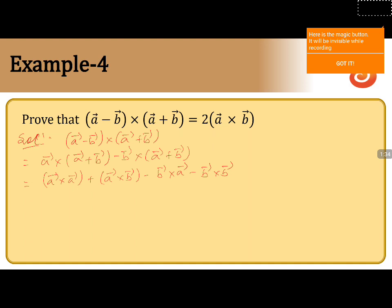We know that in the case of a cross product, the cross product between like vectors — like a × a, b × b, c × c — the values will become 0. Based on that concept, the very first term a⃗ × a⃗ will become 0. When you see the second term, it is a⃗ × b⃗, so we will write a cross b as it is.